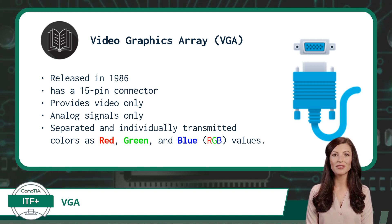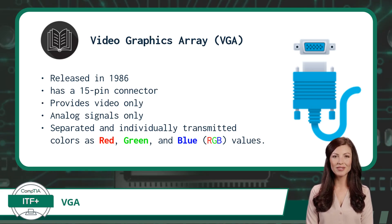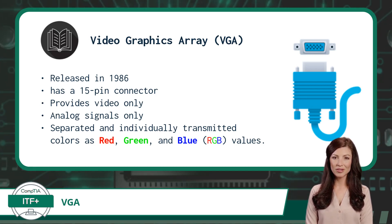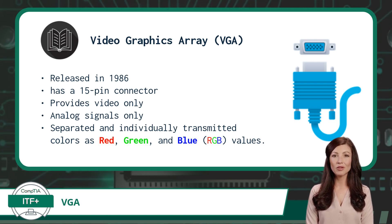VGA also uses analog signals to transmit data. As discussed in the Electrical Signals video, analog signals do not transmit as fast as digital signals. As a byproduct, the use of analog signals with the VGA graphic interface standard causes it to be incapable of supporting higher resolutions.